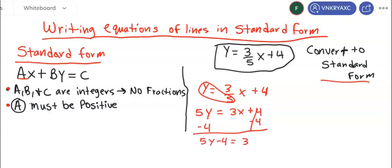And I will also have to subtract the 5y on both sides so that I can end up having -4 = 3x, so that I can end up having 3x with the A positive minus 5y.